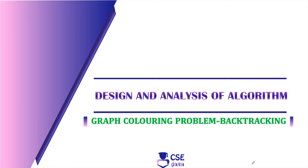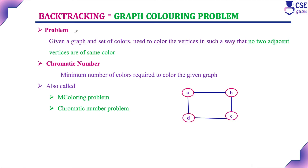The first is the N-Queens problem, the second is the subset sum problem, and the third is the Hamiltonian circuit problem. This is the fourth problem we can implement using backtracking. The problem is: given a graph and a set of colors, we need to color the vertices such that no two adjacent vertices have the same color.